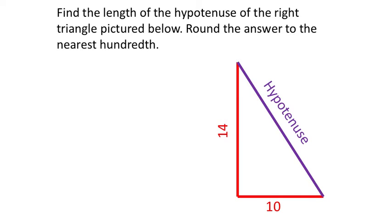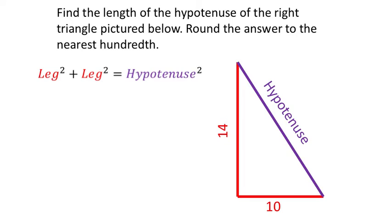Find the length of the hypotenuse of the right triangle pictured below. Round the answer to the nearest hundredth. It's saying to round to the nearest hundredth, which means I'm going to use the calculator. The legs are represented with letters A and B, and the hypotenuse is represented with the letter C.